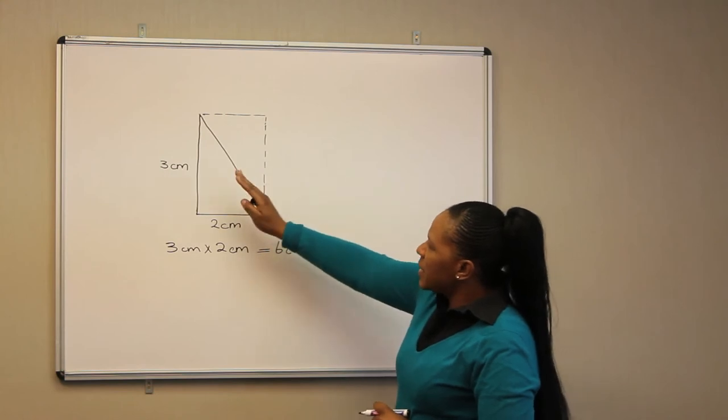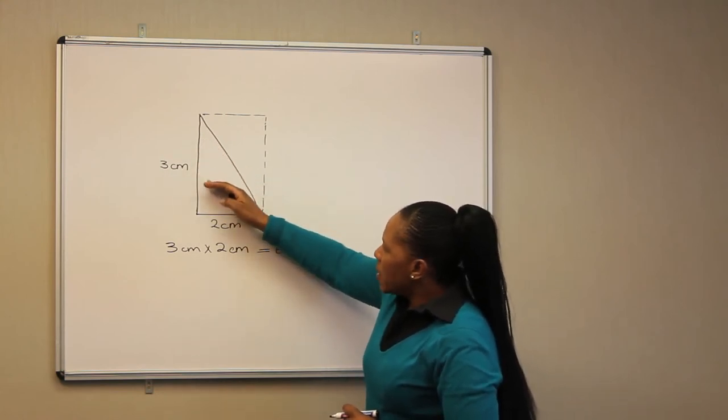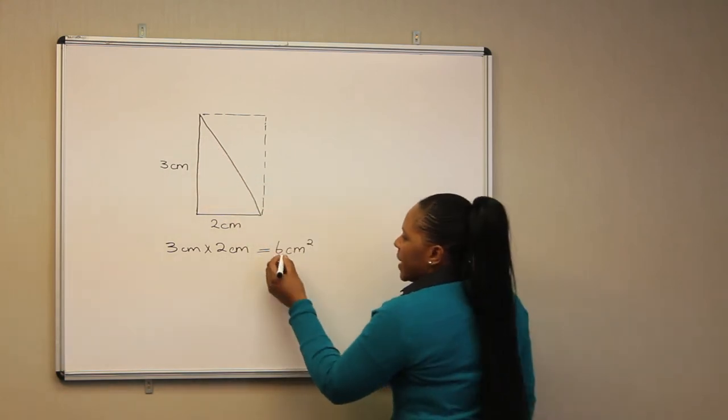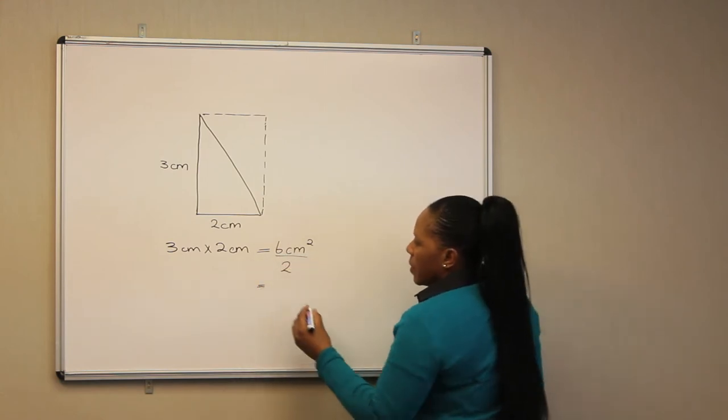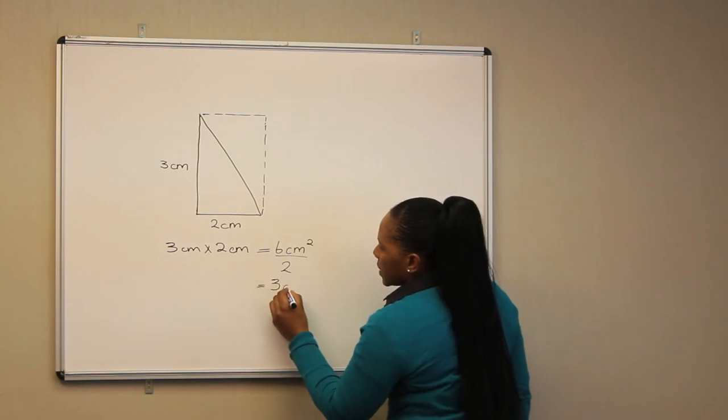Now, to find the area of this triangle, we divide this by 2, which gives us an area of 3 cm².